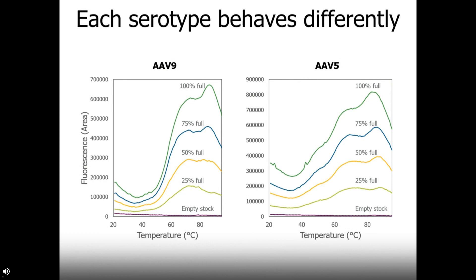Reading tons of samples on UNCLE, we've noticed that each serotype behaves very differently. Here, a series mixing empty and full capsids for AAV-5 (right) and AAV-9 (left) shows a couple of observations. AAV-9 shows bimodal genome ejection behavior — a first weak peak between about 40–50°C and most genome ejection occurring between 50 and 60°C. Contrast that with AAV-5, which shows a much clearer behavior with a lot of genome ejection between 40 and 50°C and a little less at higher temperatures. For both samples, as the number of empty capsids increases and percent full decreases, the Cybergold signal also decreases — as expected, since there's less DNA present.